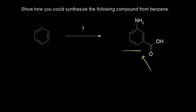We have an amino group here, which is an ortho-para director because of the lone pair of electrons on the nitrogen next to our ring. And over here, we have a carboxylic acid functional group attached to our ring. The carbonyl carbon is partially positive, which makes this a meta director.